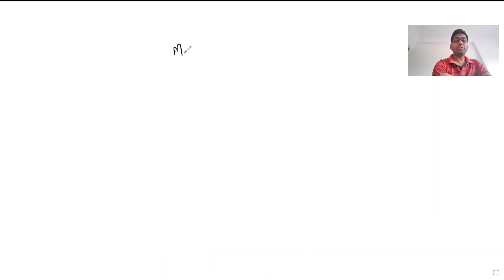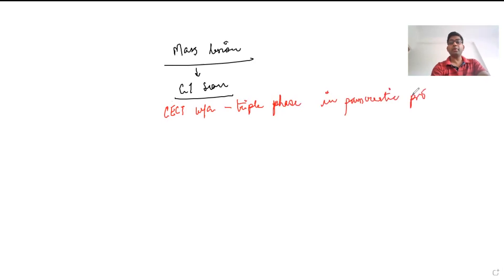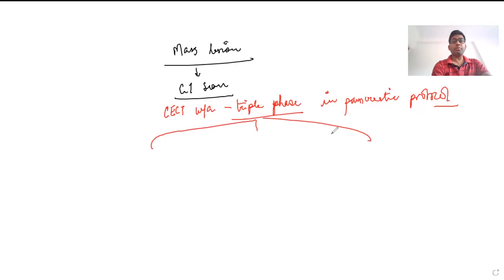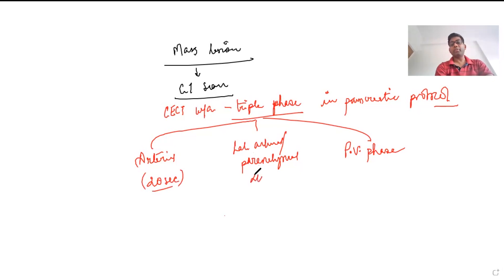If the ultrasound is suggestive of a mass lesion in the pancreas, we proceed to a CT scan, which is very sensitive for detecting the mass and for staging. The specific CT scan ordered is a CECT whole abdomen, done in triple phase with pancreatic protocol. The radiologist must know what to look for. The triple phase consists of: arterial phase at approximately 20 seconds after contrast injection, late arterial or parenchymal phase at approximately 40 seconds, and portal venous phase at approximately 70 seconds.